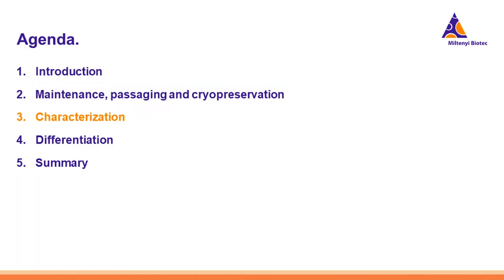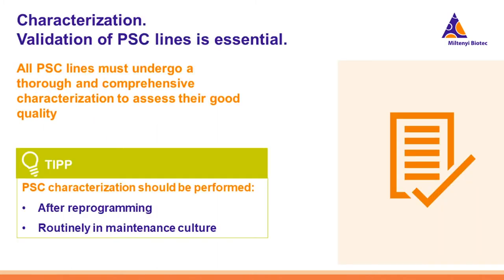We quickly mentioned that PSCs must show specific characteristics. Let's now look in more detail at what these are and what we mean by the term PSC characterization. PSC characterization includes all the assays performed to confirm the pluripotency, quality, identity, and safety of a pluripotent cell line.